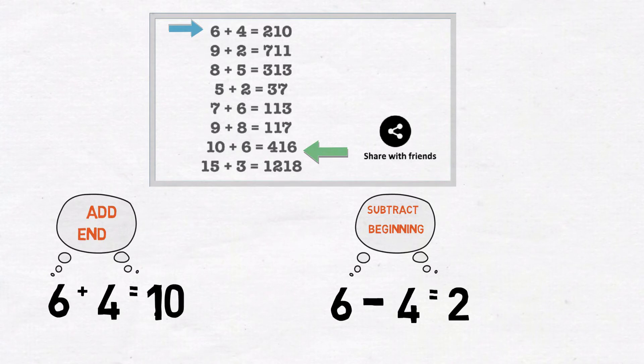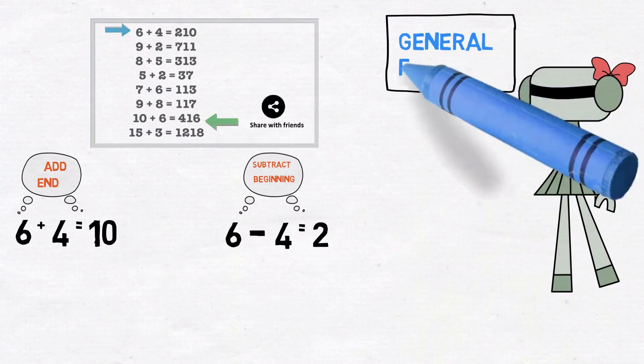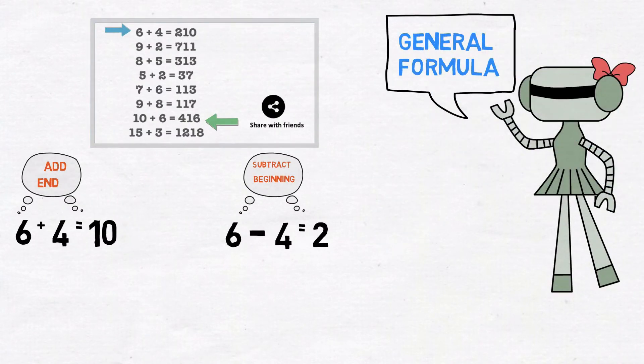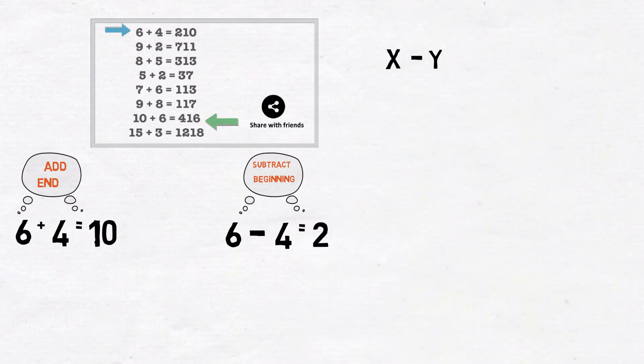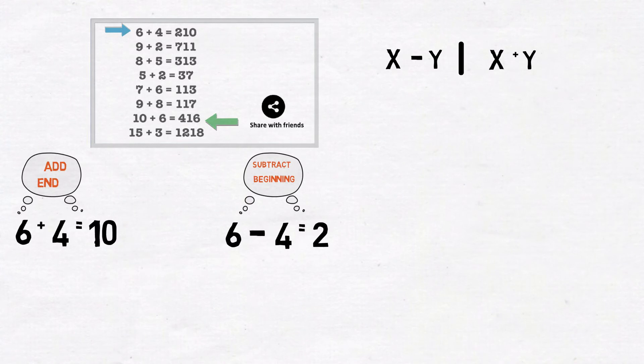So now let us see if we can come up with a generic formula for our pattern. So assuming x and y being our numbers on the left, the solution on the right is a join of x minus y and x plus y. And now that we have this generic formula, let us apply it to find the solution to our problem.